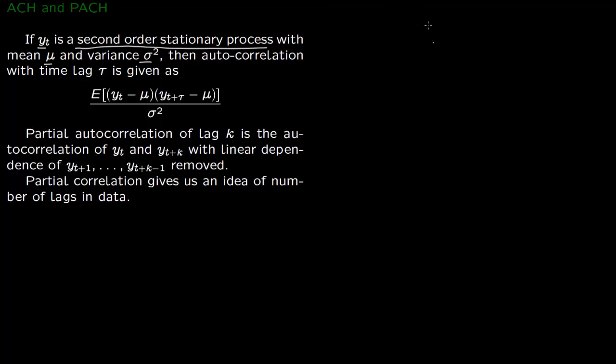Y_t is nothing but a bunch of numbers: Y1, Y2, Y3, and so on. Say you have a hundred such values. This is a process with mean μ and variance σ². Autocorrelation at time lag τ is then given as...